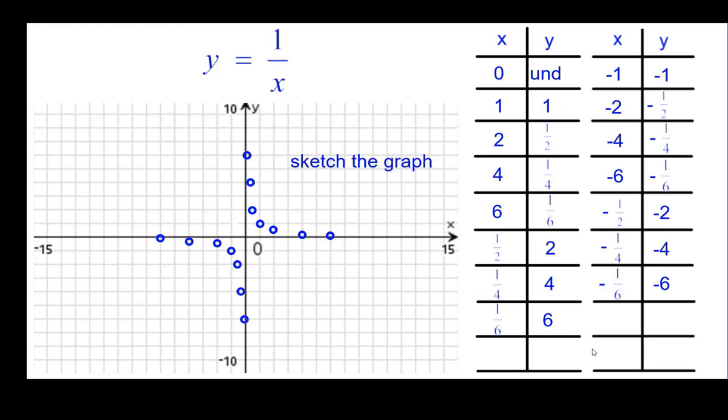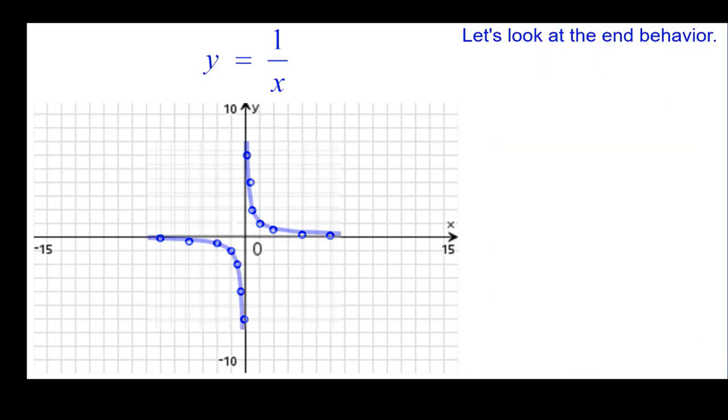And then we'll go ahead and sketch the graph, connect the points. To finish the graph, we're going to have to look at end behavior, what's happening at the ends of each of the four parts of the axes. So as x gets very large in the positive direction, what is happening to the y value?